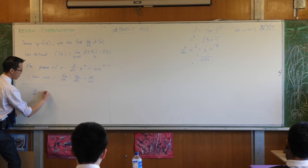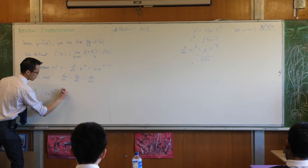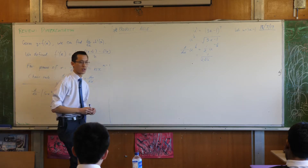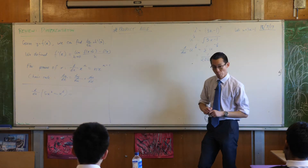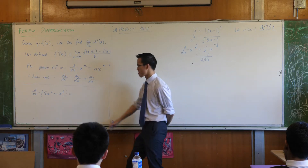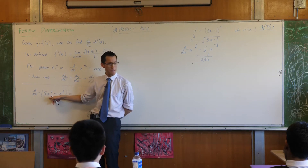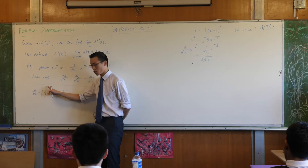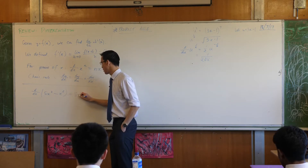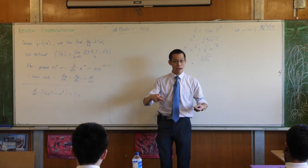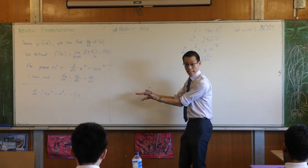If I ask you to differentiate this — this is not a rhetorical question — can you differentiate this for me? What's that going to turn into? The 2 is going to come out the front, combines with the 5, so you get 10. The power of X reduces by 1, which becomes 1, so 10X.